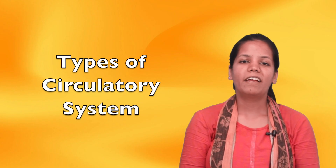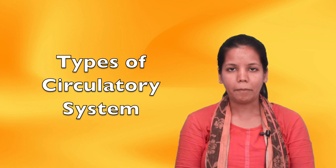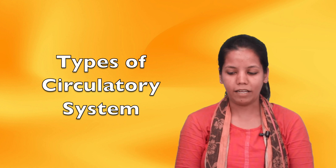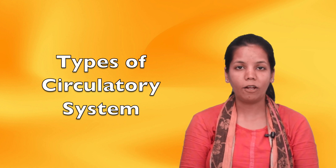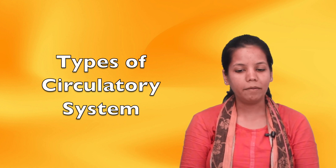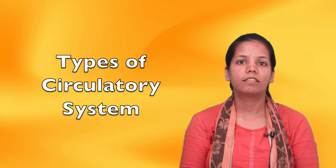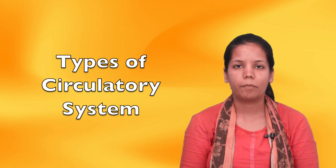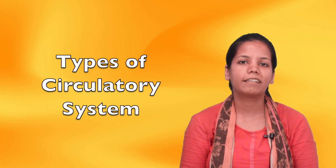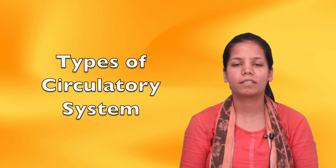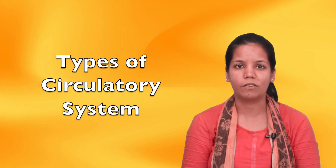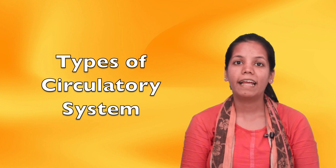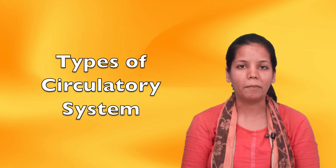Hello students, today we are studying the chapter on circulation and in that we are studying the topic: types of circulatory system. There are two kinds of circulatory system — the open circulatory system and the closed circulatory system. Let's study about it today.